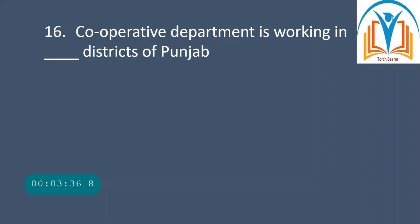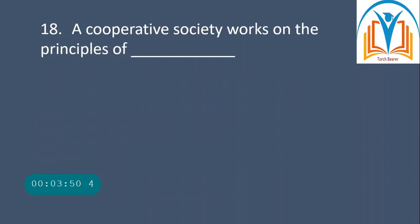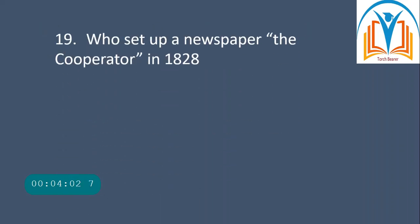Next question: cooperative department is working in how many districts of Punjab? The answer is 36. Question 17: ICA is the abbreviation of International Cooperative Alliance. Next question: a cooperative society works on the principles of self-help and mutual help. Question number 19: who set up a newspaper called 'The Cooperator' in 1828? He was William King.